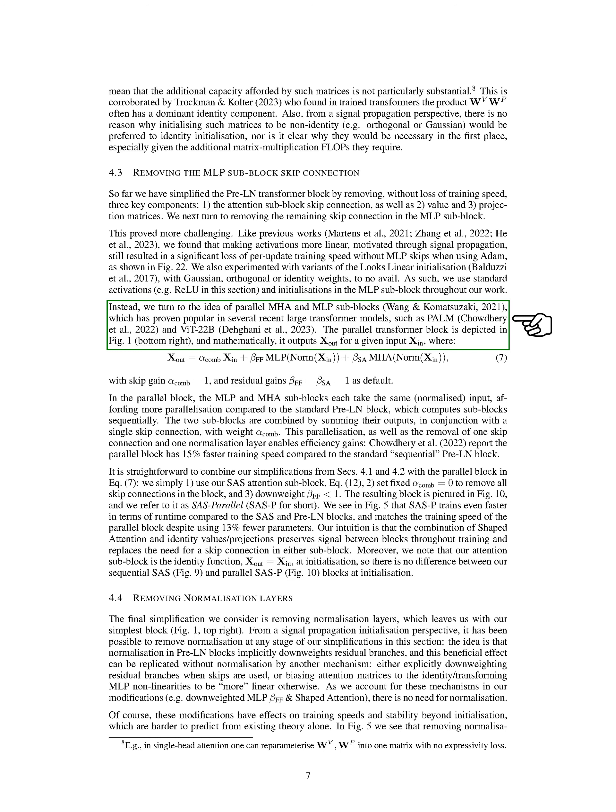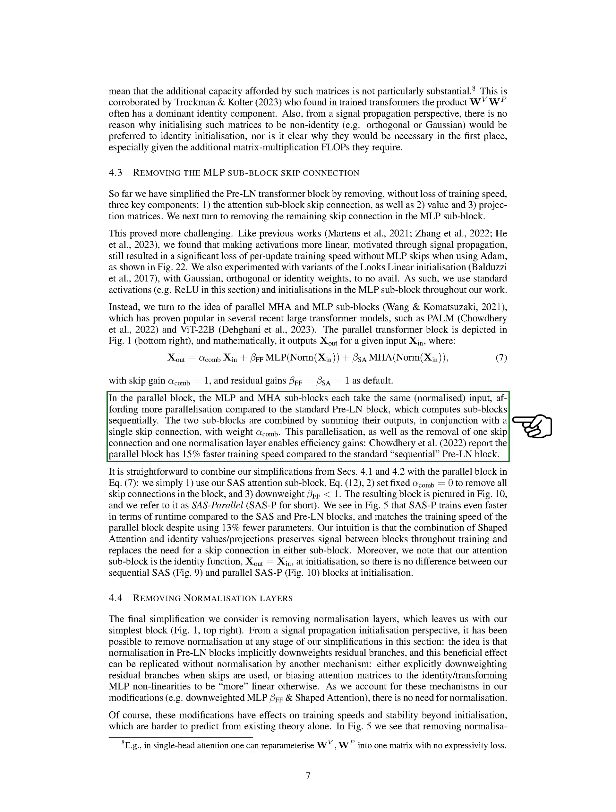We then explored the concept of parallel MHA and MLP sub-blocks, which has been successful in several recent large transformer models like PaLM and ViT-22B. In this parallel transformer block, the MLP and MHA sub-blocks each receive the same normalized input, which allows for more parallelization compared to the standard pre-LN block that processes sub-blocks sequentially. The outputs of these two sub-blocks are then added together, along with a single skip connection with a weight of 1. This parallelization, along with the removal of one skip connection and one normalization layer, results in a 15% faster training speed compared to the standard sequential pre-LN block.